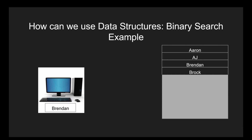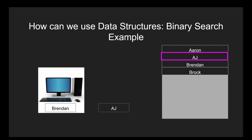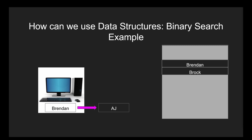Now we simply treat the top half of the list as an entirely new entity and repeat the process again. We will find the middle-most element on this new list of names and again compare it to the name we are trying to find, then return the index if matched, or compare to see if it comes before or after the middle index. Going back to our example, let's say the middle name of this new list is AJ. Now we know that Brandon comes after AJ alphabetically, so we can ignore the top half of this sub-list. We repeat this process again and again until we find the name we are looking for. This time, the middle index is Brandon — that's what we are searching for — so we finally return index 2.